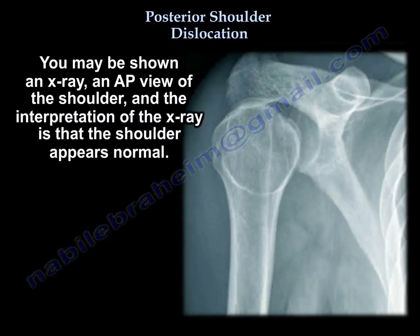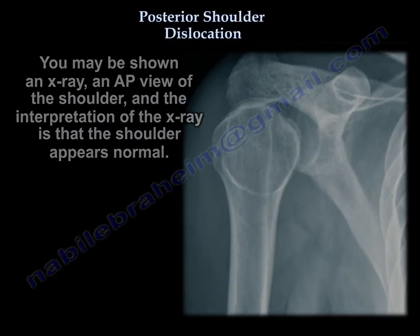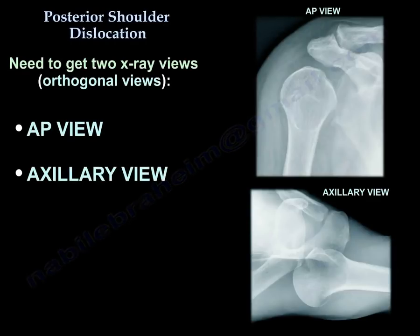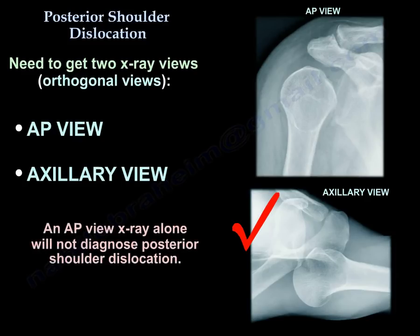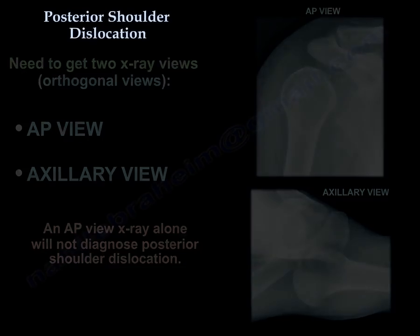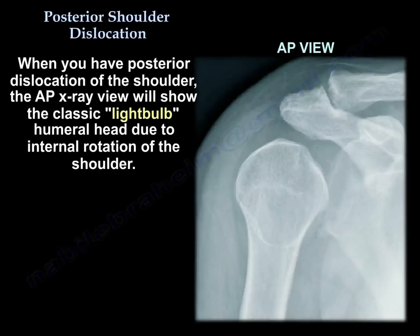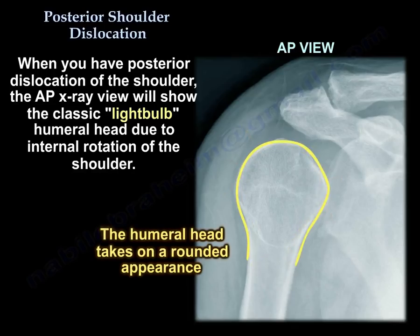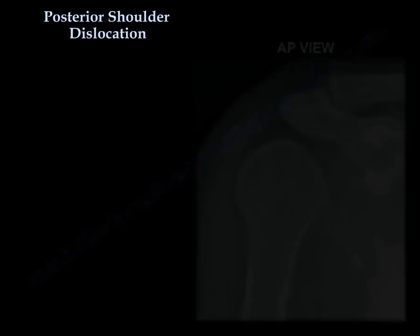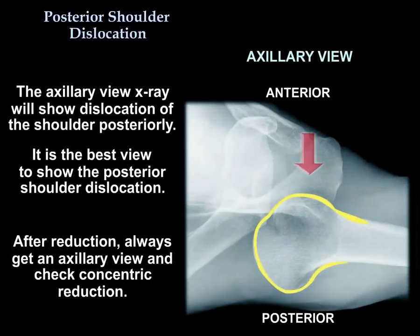You may be shown an x-ray — an AP view of the shoulder — and the interpretation will appear normal. You need to get two x-ray views: orthogonal views. An AP view alone will not diagnose posterior shoulder dislocation. When you have a posterior dislocation, the AP x-ray will show the classic light bulb humeral head sign, due to internal rotation of the shoulder. The axillary x-ray view will show the dislocation of the shoulder posteriorly.